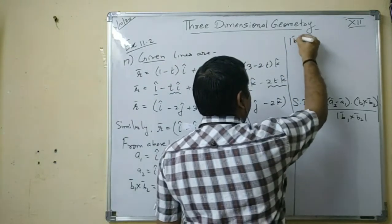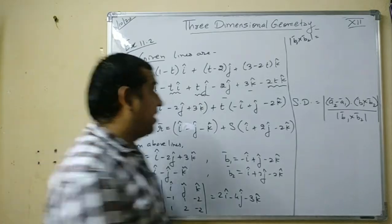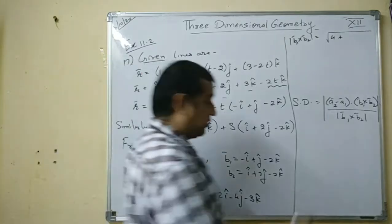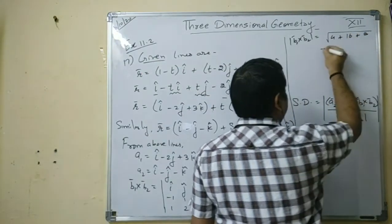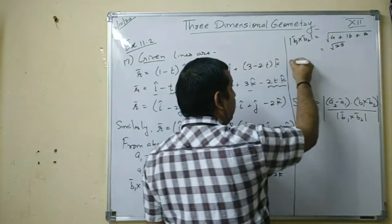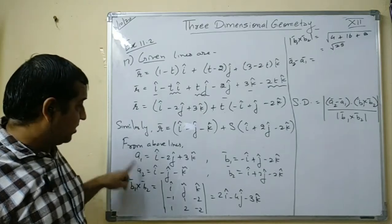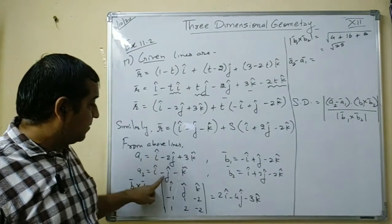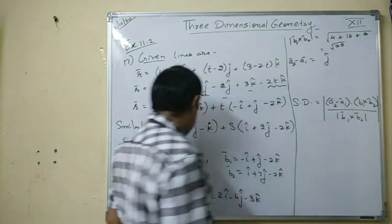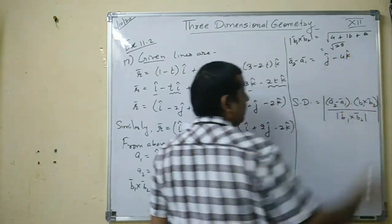Find the magnitude (denominator): |b1 × b2| = √(2² + (-4)² + (-3)²) = √(4 + 16 + 9) = √29. Now find a2 - a1: (i-i) cancels, (-j + 2j) = j, and (-1 - 3) = -4k. So a2 - a1 = j - 4k.